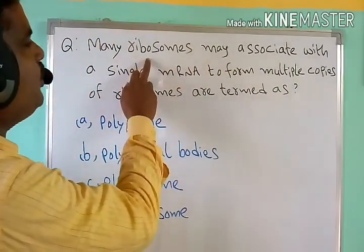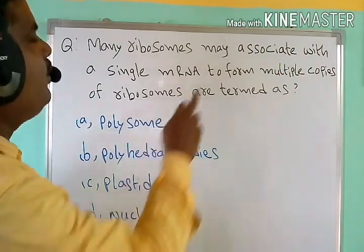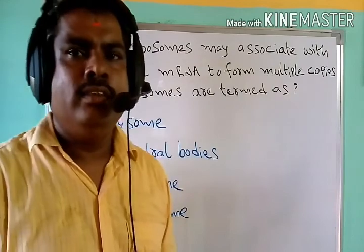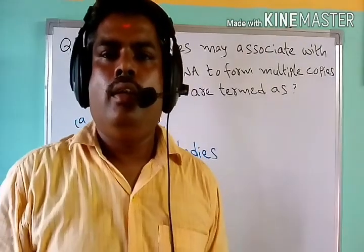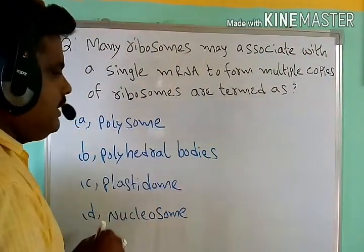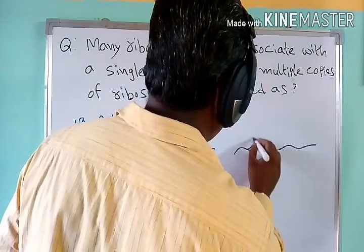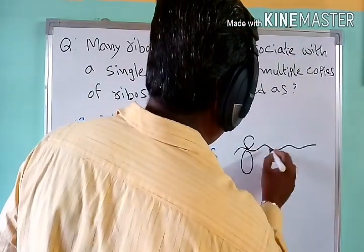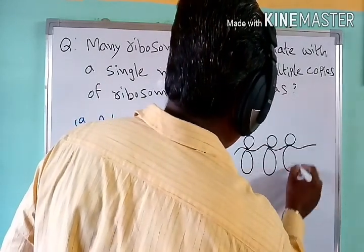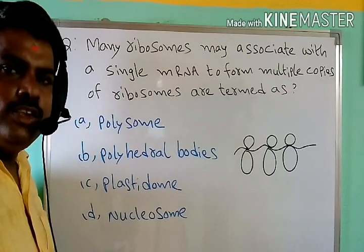Next question: many ribosomes may be associated with a single mRNA to form multiple copies — this structure is termed as what? Polysomes are the structures formed from the association of mRNA with a large number of ribosomes. This is commonly called a polysome.